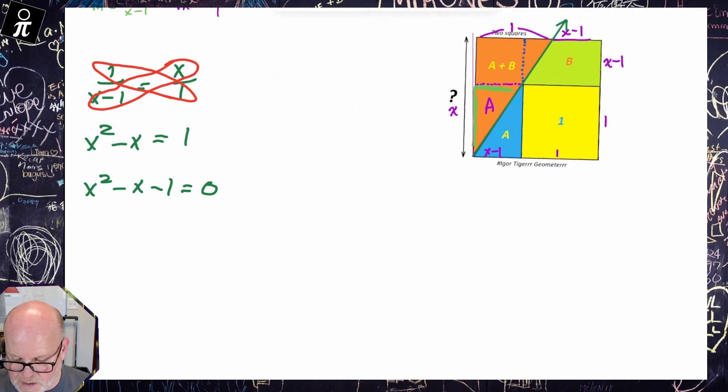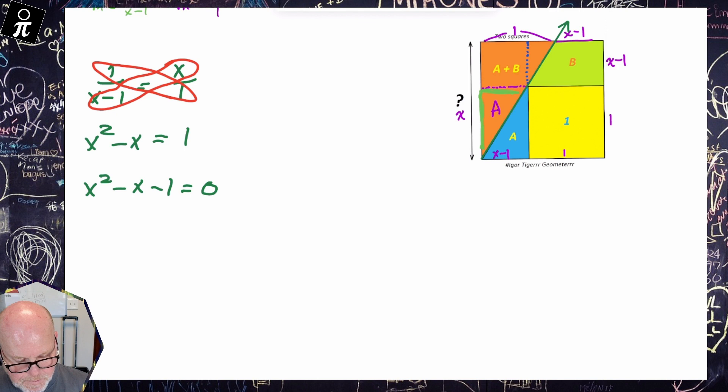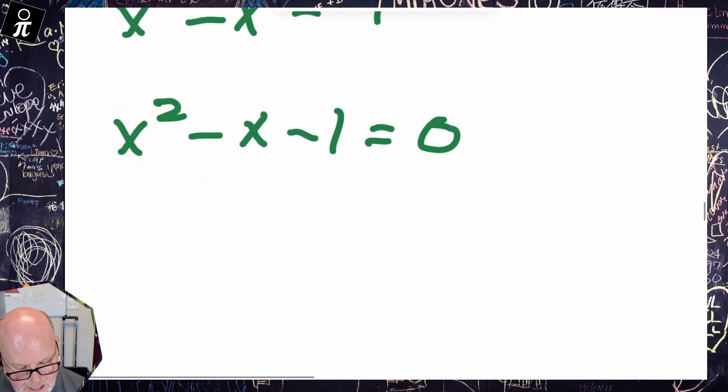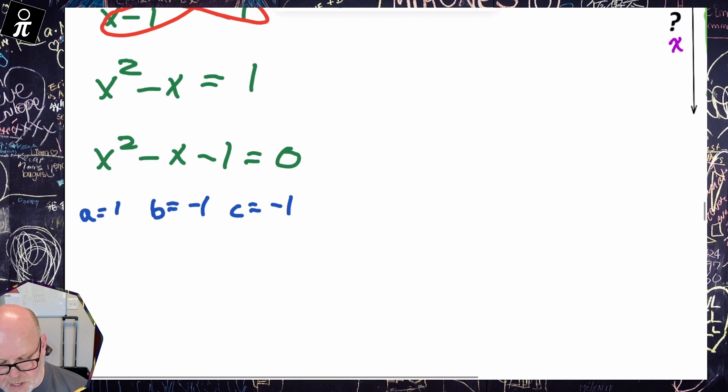So let's use the quadratic formula. My A here is one, my B is negative one, and my C is negative one. So let's do the quadratic formula. So X is equal to negative B plus or minus the square root of B squared minus 4AC all over 2A.